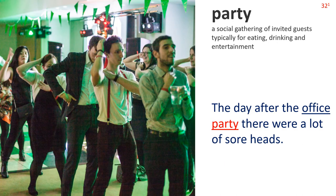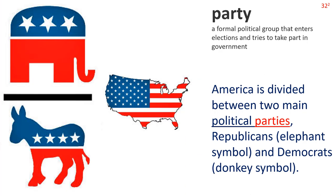Party — Definition 1: a social gathering of invited guests, typically for eating, drinking and entertainment. The day after the office party there were a lot of sore heads. Definition 2: a formal political group that enters elections and tries to take part in government. America is divided between two main political parties — Republicans and Democrats.